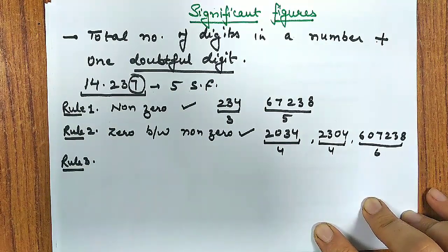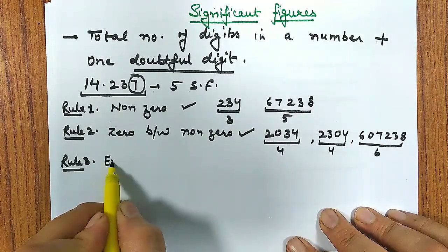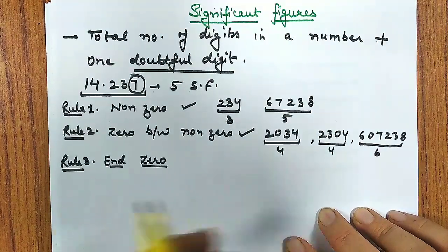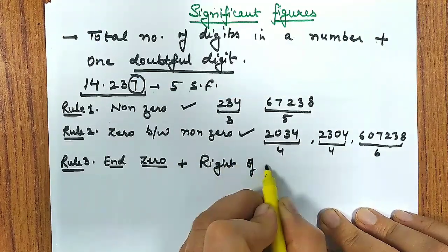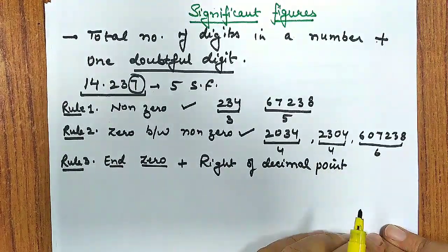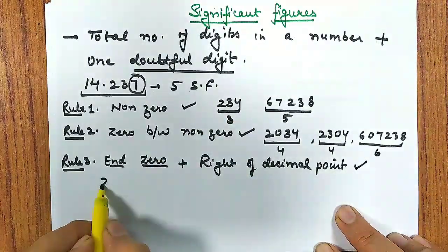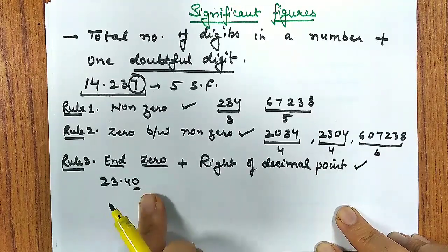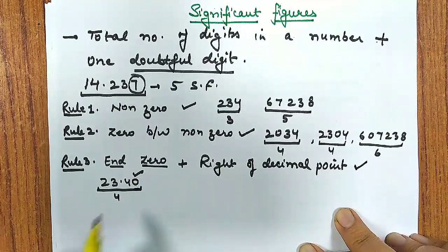Now let's talk about zero. Second rule says zero between non-zero digits - that zero is also significant. Let's talk about the same value 2034. This zero lies between two non-zero and thus it has a significance. Now I will be having four significant figures.